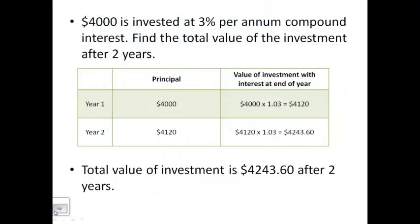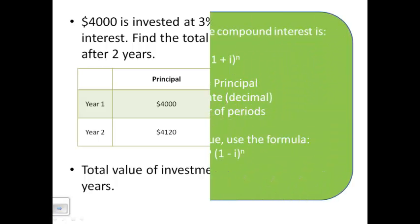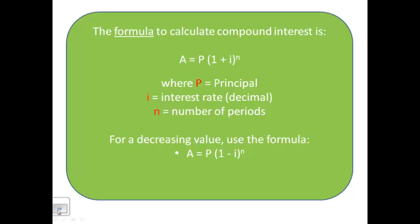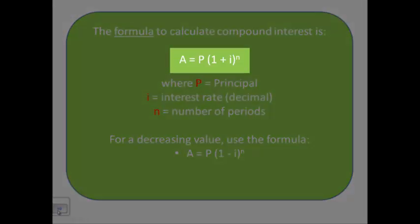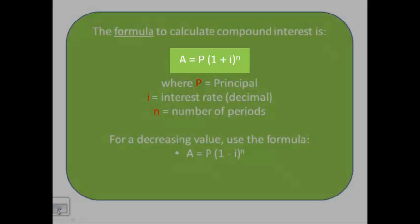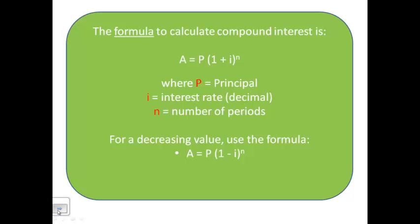Now, there is a formula. The formula to calculate compound interest is A equals P times the quantity, 1 plus I to the N. P is your principal, as it always is. I is the interest rate, as a decimal. And N is the number of periods. In this case, as opposed to our I equals PRT, we're going to get our total amount.